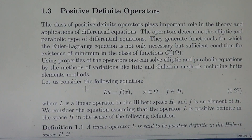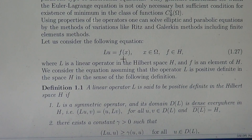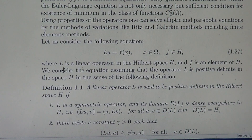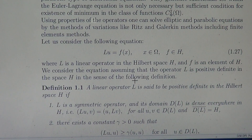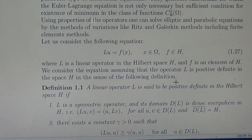Let us consider the following abstract equation: LU equals F, where x is a point of the domain omega and F is an element of the Hilbert space H. Here L is a linear operator transforming functions from the Hilbert space into the Hilbert space H. We consider this equation assuming that the operator L is positive definite in the Hilbert space, in the sense of the following definition.